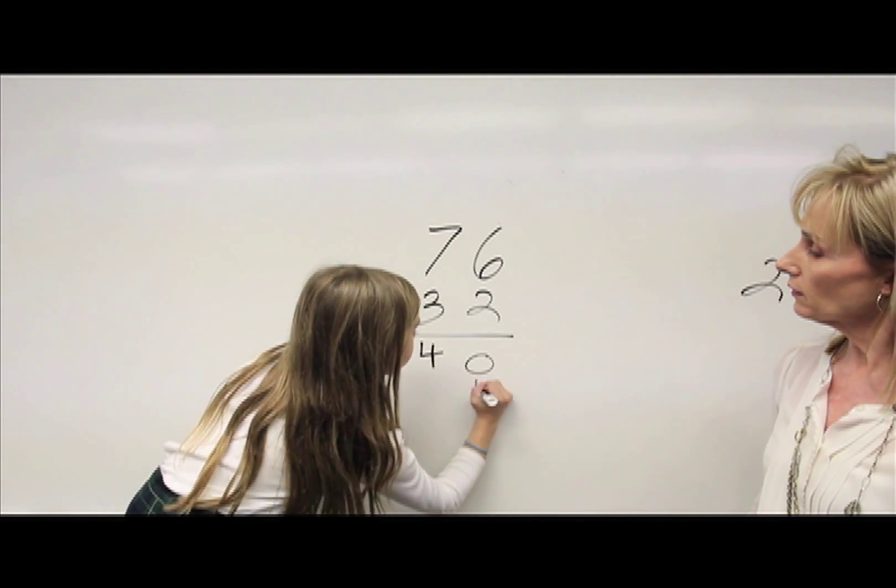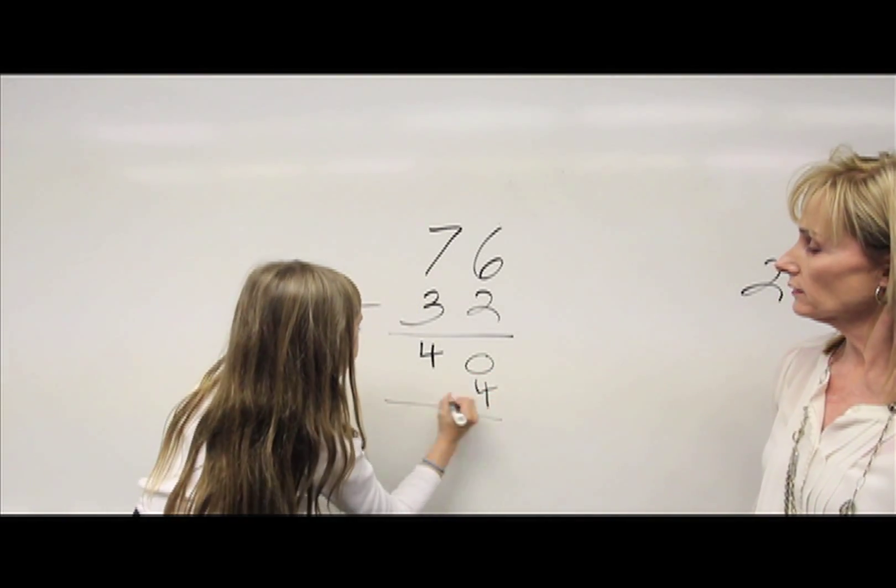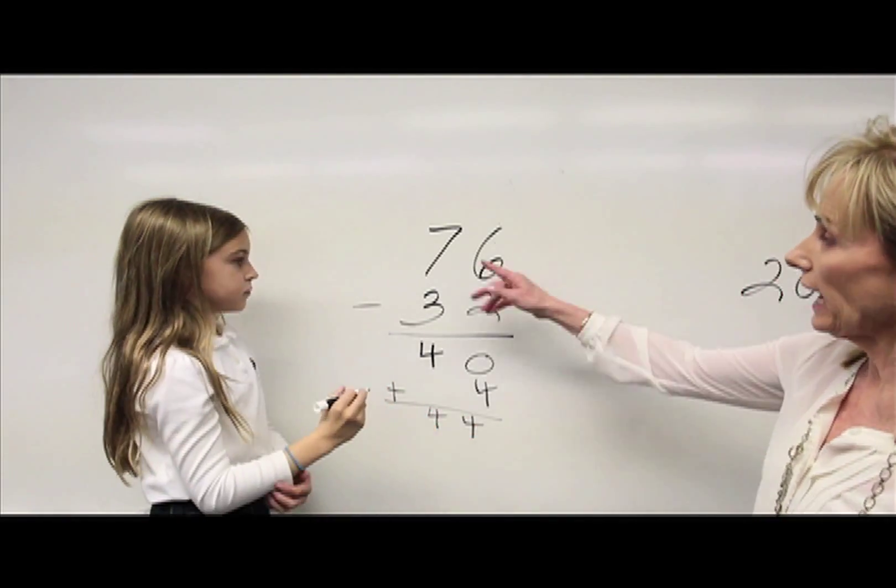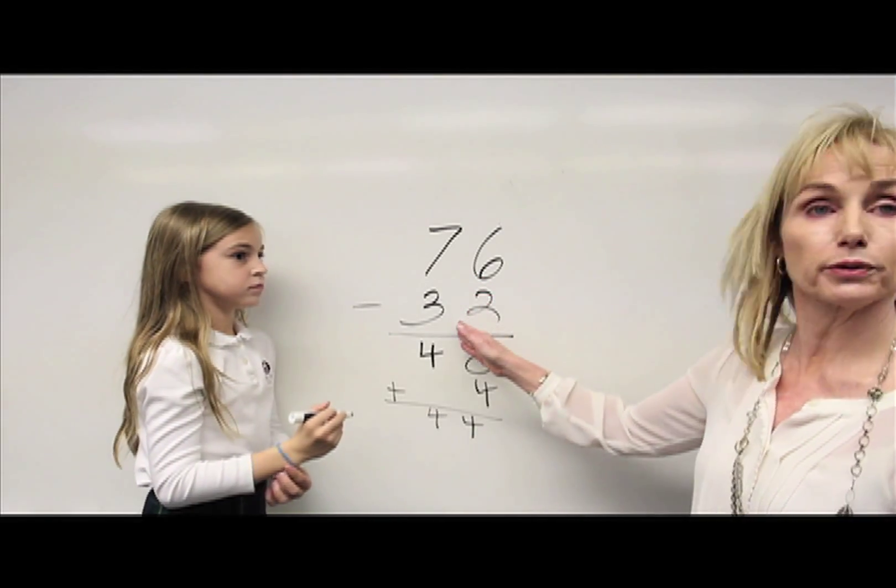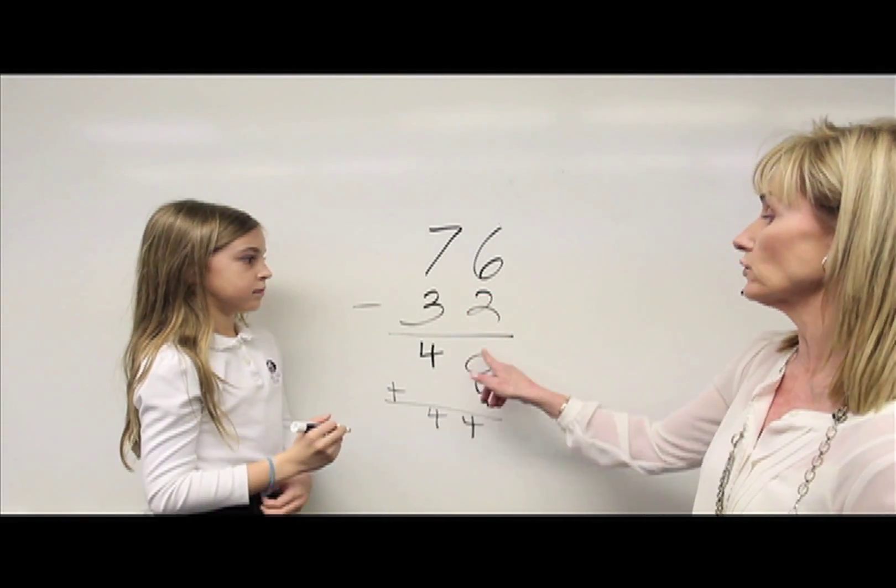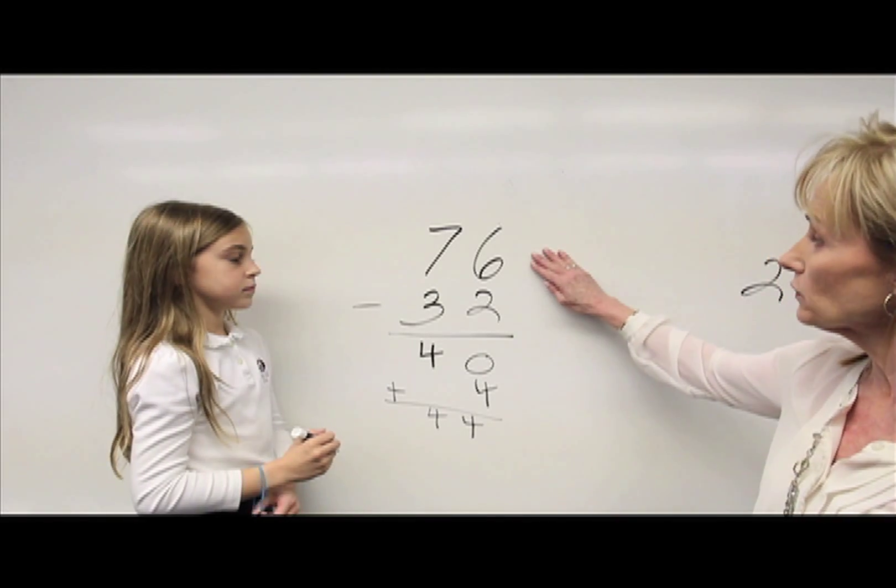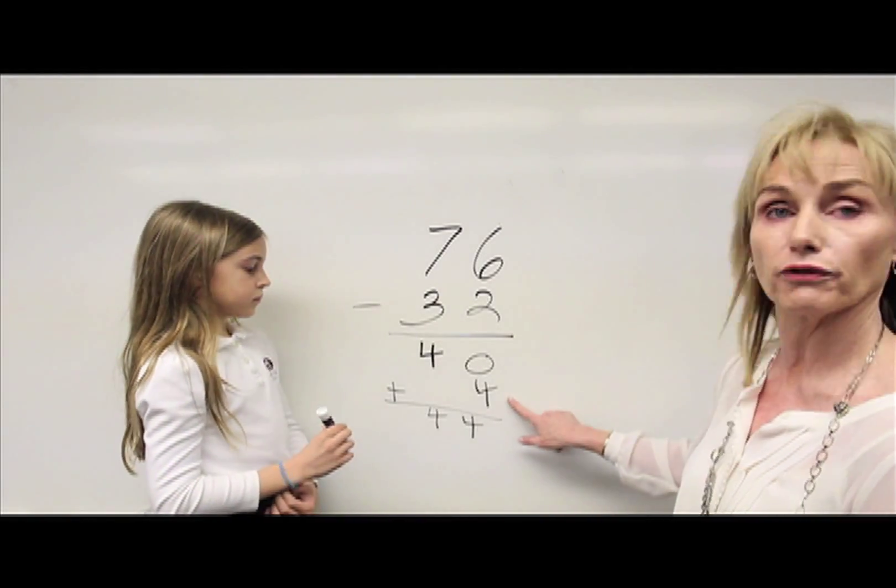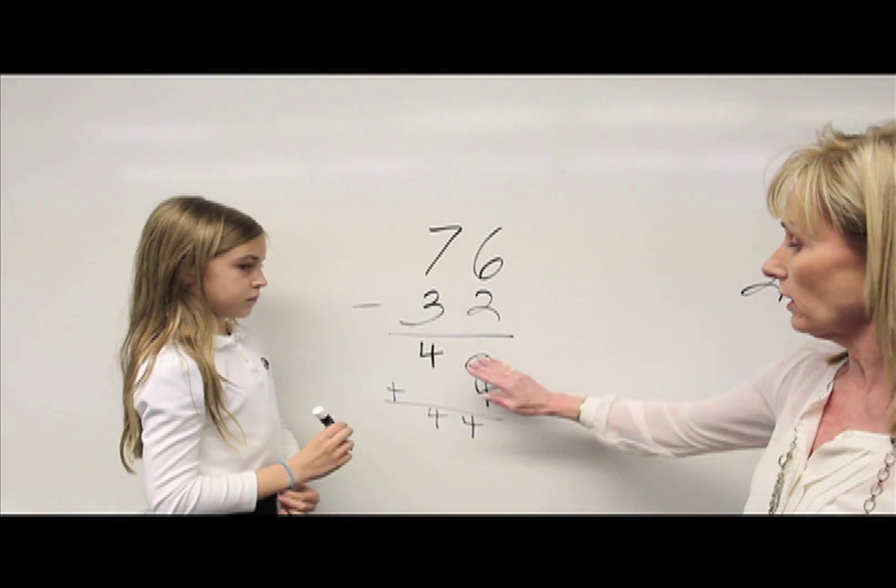So my answer would be 44. And when we're teaching this I would say I have seven tens, I owe you three tens, I still have four tens or 40. I have six ones, I owe you two ones, I still have four ones or four. So because I still have that, we add that together.